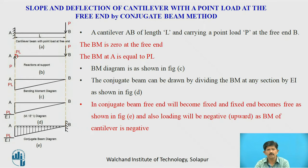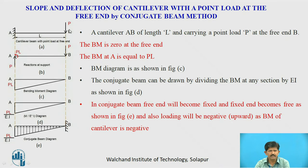Now we will find the slope and deflection of a cantilever beam having a point load at the free end. This is a cantilever beam AB of length L having a point load P at the free end. The bending moment at the free end B will be zero, and the bending moment at A will be P into L, that is PL, as shown in figure C.